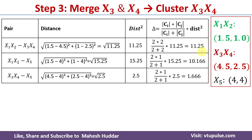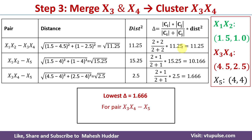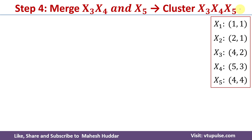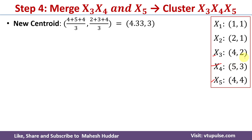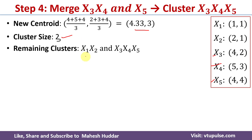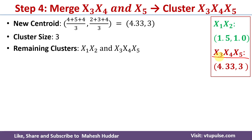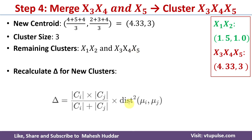Once we find the merging cost for all remaining pairs, the pair {x3,x4} with x5 has the minimum merging cost of 1.666. So we merge these two clusters to get the new cluster {x3, x4, x5}. We find the new centroid using x3, x4, and x5: (4+5+4)/3, (2+3+4)/3, which equals (4.33, 3). This new cluster contains three data points so the cluster size is 3. The remaining clusters are {x1,x2} and {x3,x4,x5}.